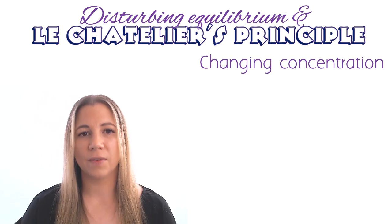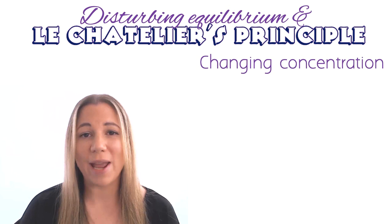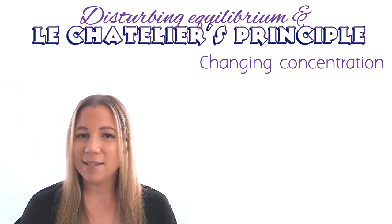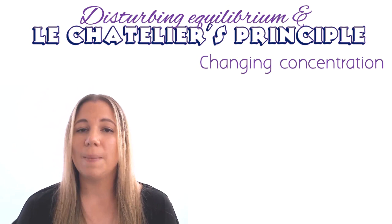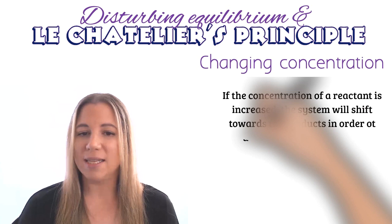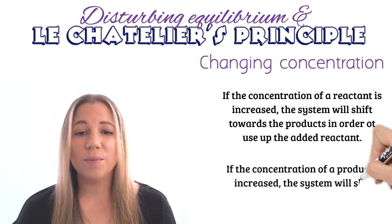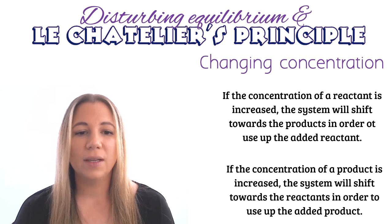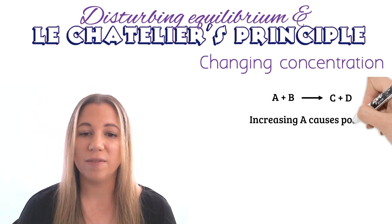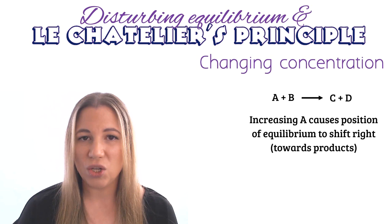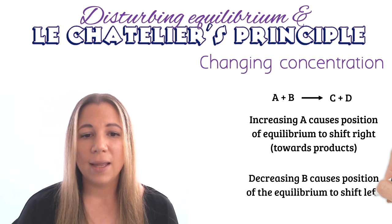Now let's look at what happens when we change the concentration. If the concentration of a reactant or product is increased, the equilibrium will shift to minimise that disturbance. If the concentration of a reactant is increased, it shifts towards the products to use up that added reactant. If the concentration of a product is increased, it shifts towards the reactants. Conversely, decreasing the concentration of a species also shifts the equilibrium to try to make more of it.